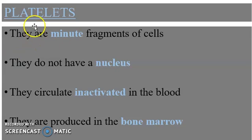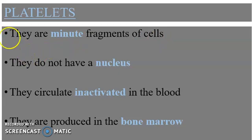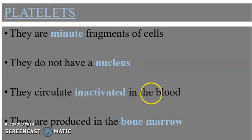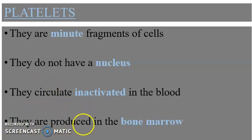Finally, let's look at the platelets. The platelets are minute, meaning they are tiny fragments of cells. They do not have a nucleus. They circulate inactivated in the blood, meaning they only become activated when exposed to air after a cut on the body. They are also produced in the red bone marrow.